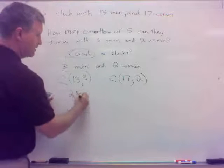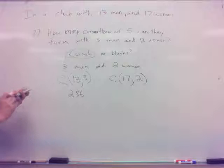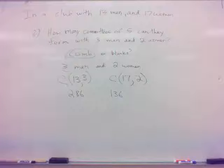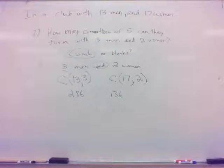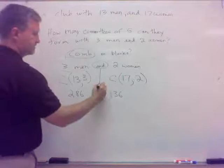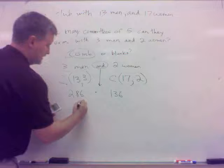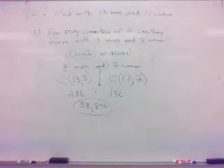It's 286. Combination seventeen, two. 136. Y'all get those numbers? That gives us two numbers. What do we do with it? Well, see that little word, and? We've talked about and in different places, but in counting, and typically means multiply. And means multiply. See the word and? Think multiply. So, I'll multiply my 286 by 136. 38,896. Okay? Question or concern?